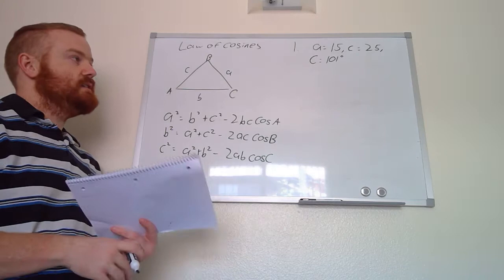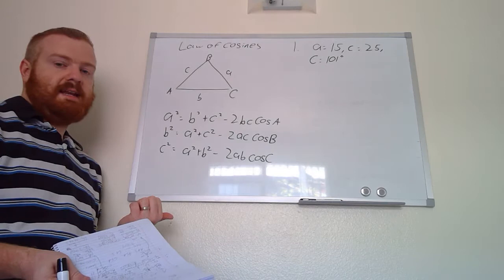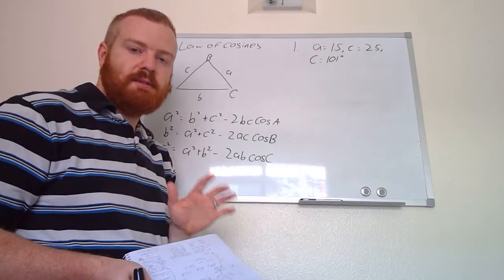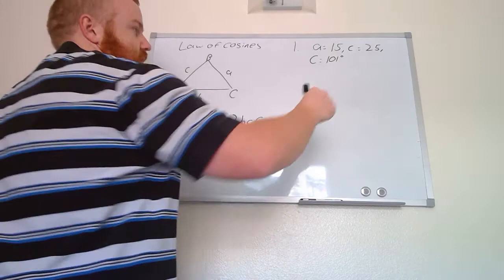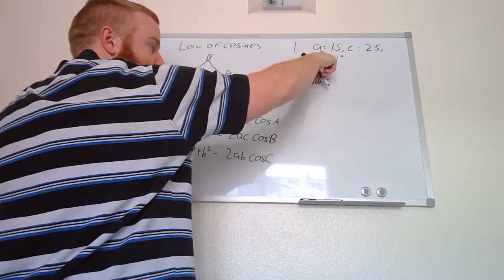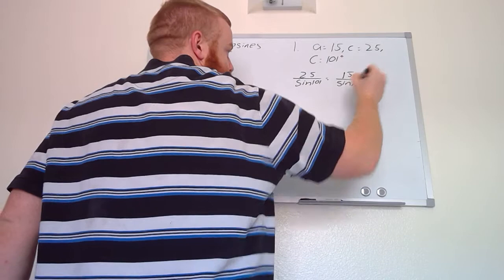Looking at the first example, instead of drawing the triangle they just write out the values: side a = 15, side c = 25, angle C = 101°. We have that pair where we have an angle and its corresponding side length, so for this one we're just going to use the Law of Sines. Since we have c and C as our pair, we start with 25 over sine(101°).